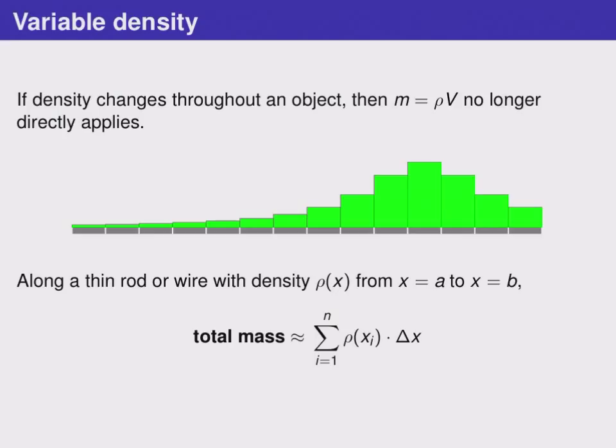But whenever we have a sum of this sort, we should now say, let's think about taking a smaller and smaller delta x, meaning we get a better and better approximation. This is the exact idea we used when figuring out the area under a curve, and that led to a definite integral.